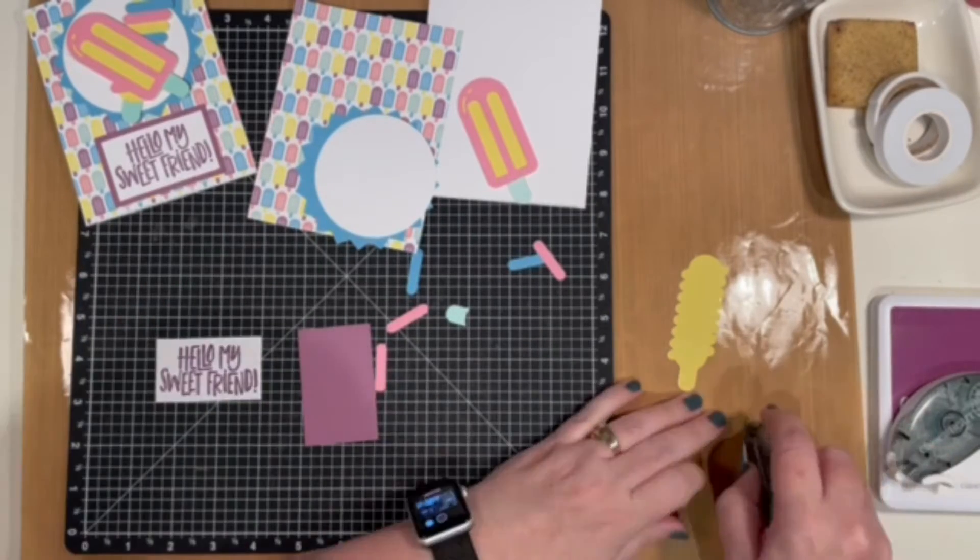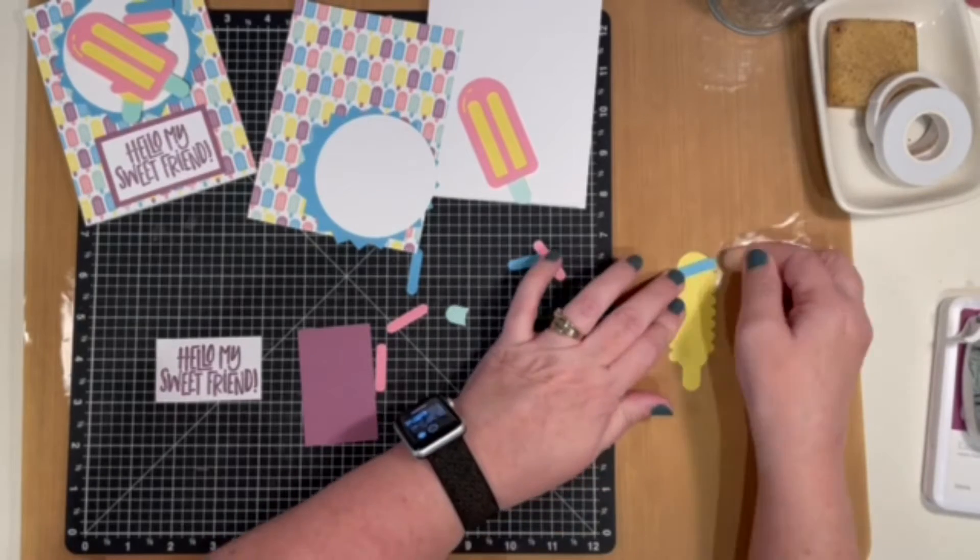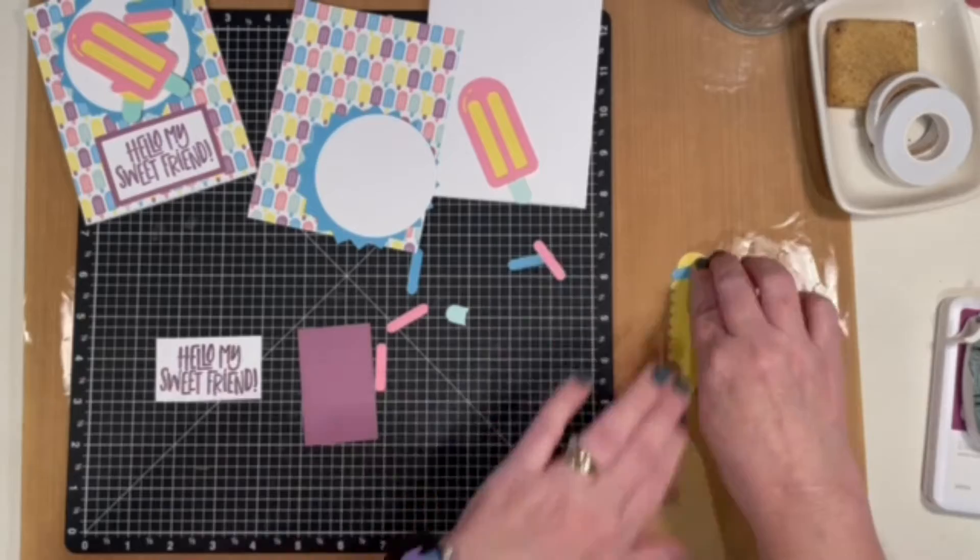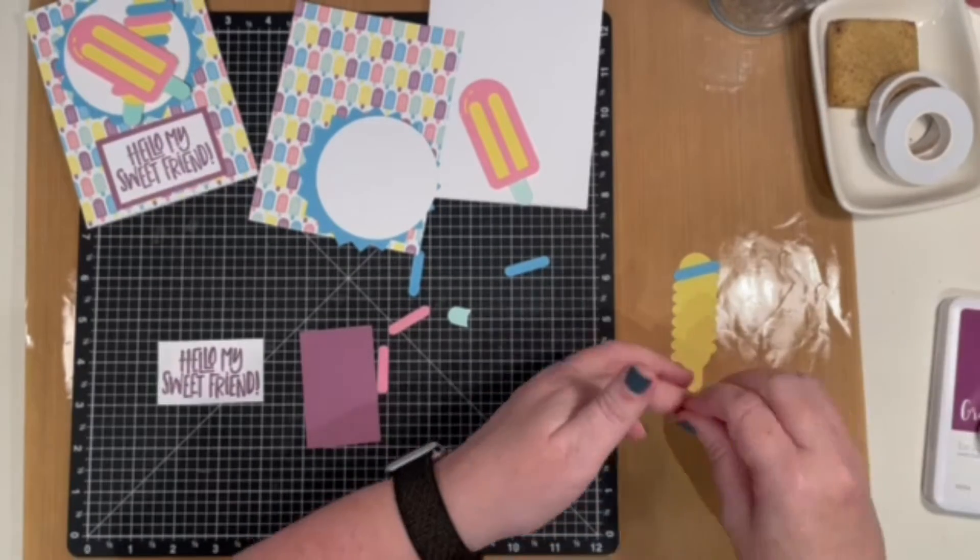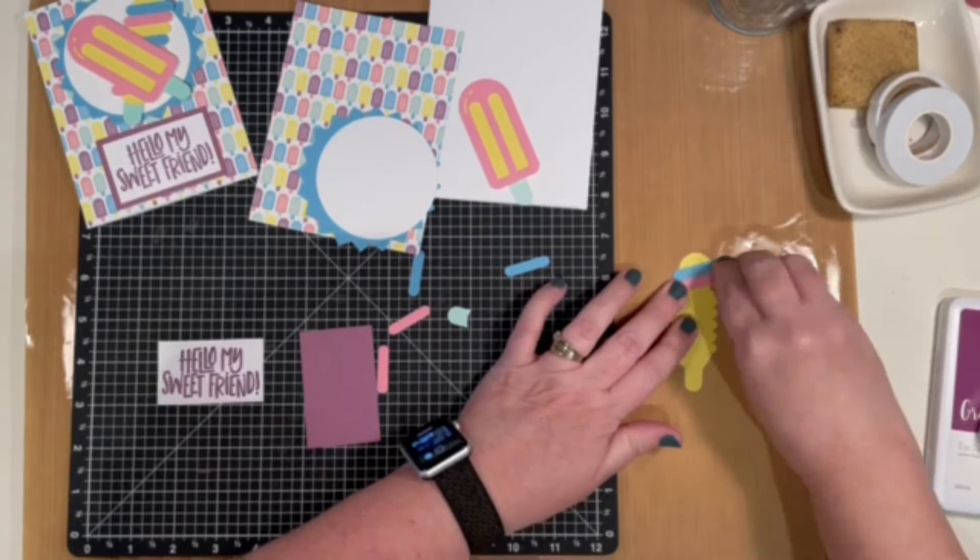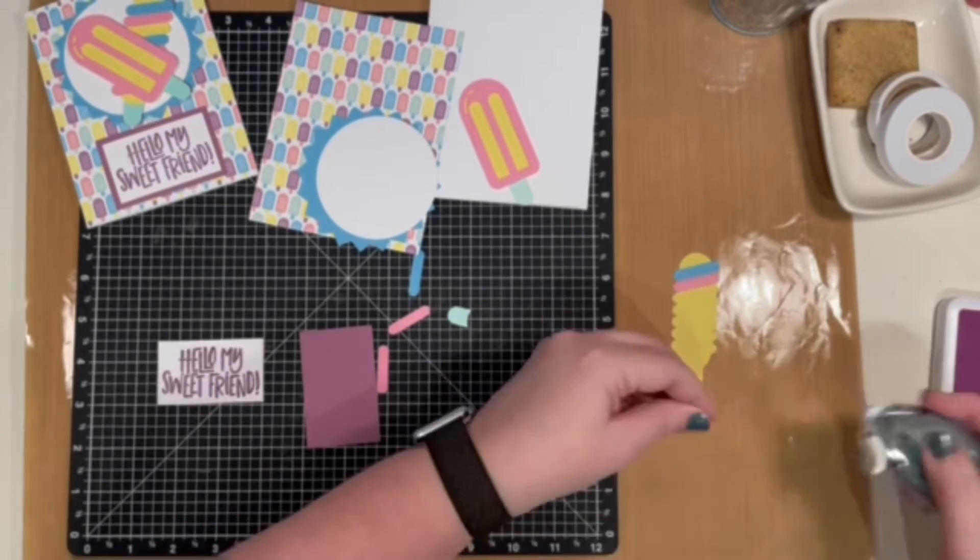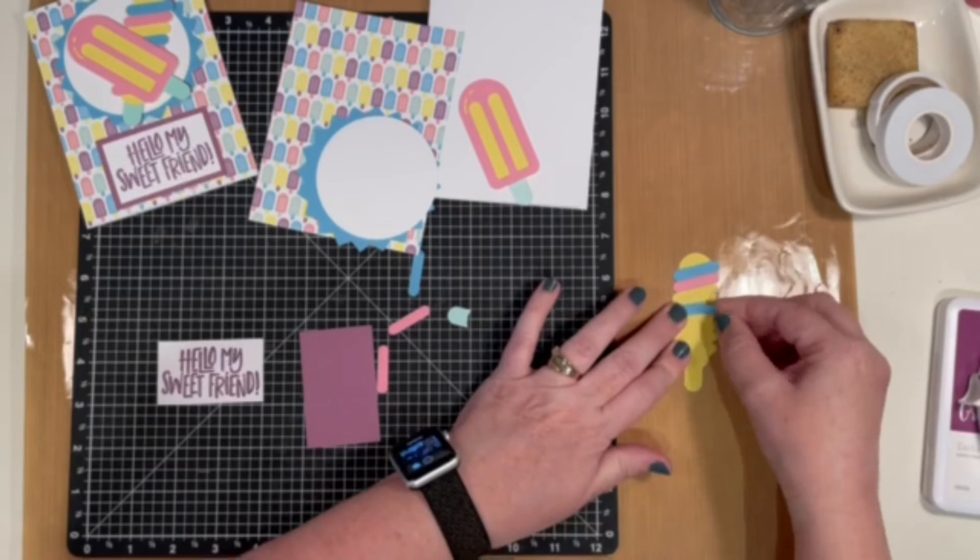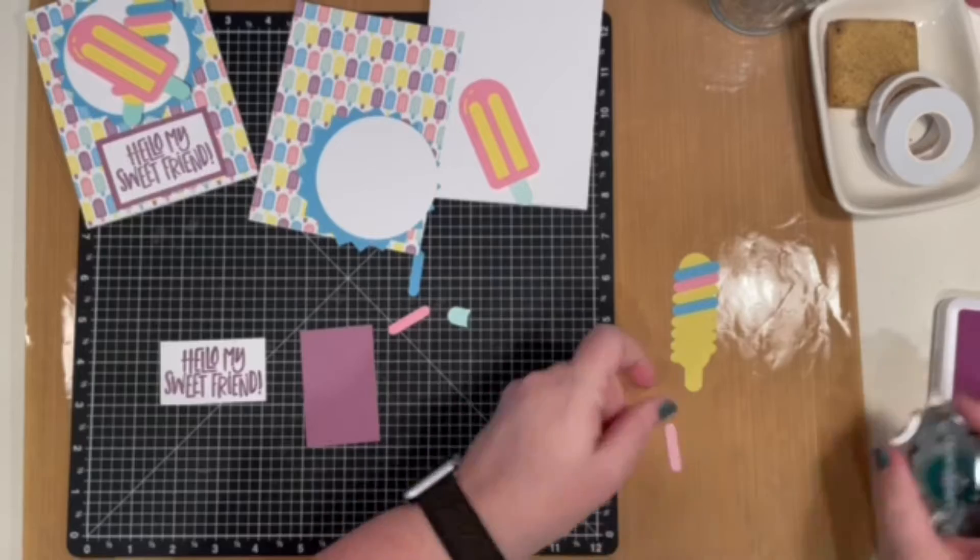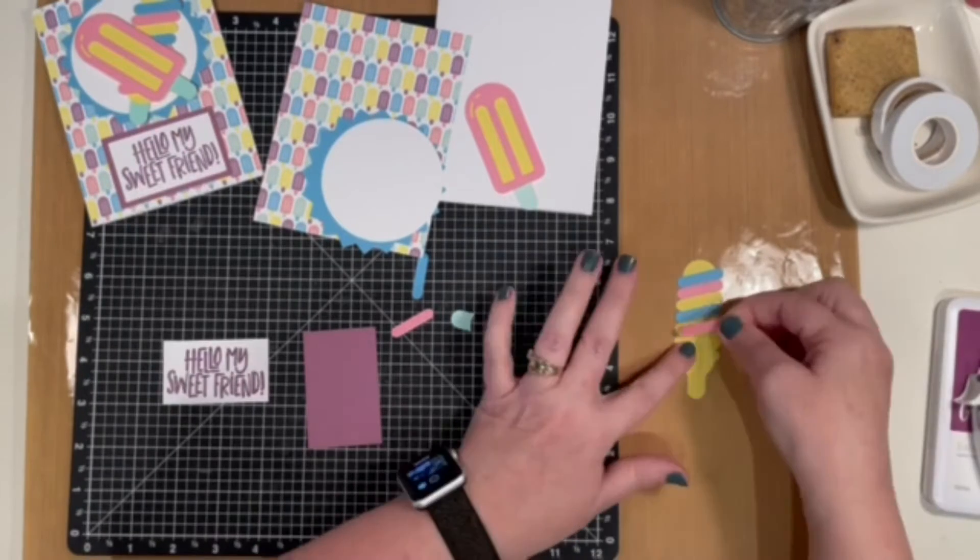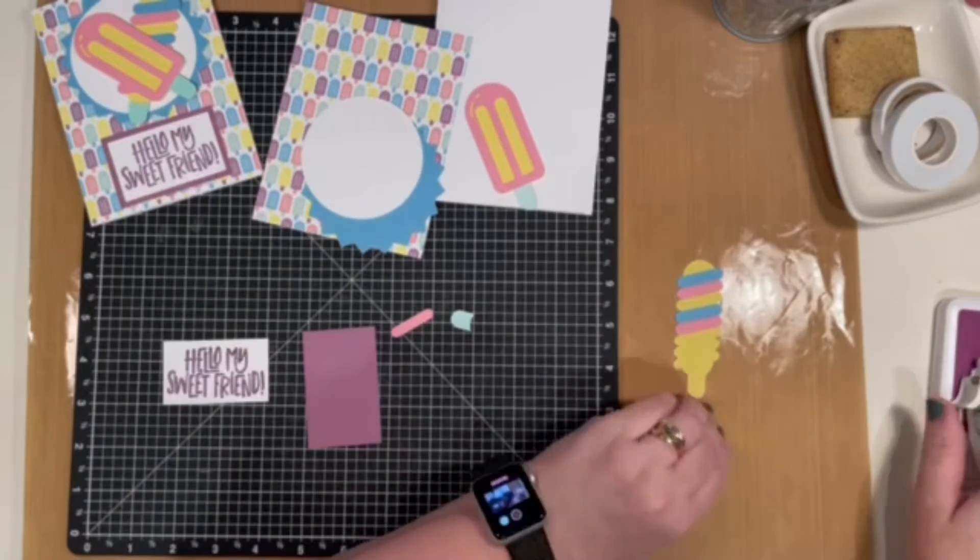The other popsicle you're going to put together in a pattern. First the Capri piece, then Flamingo, then leave the next space empty to have that Lemonade color coming through. Repeat the pattern: Capri, Flamingo, Lemonade. You'll have three sets of that.